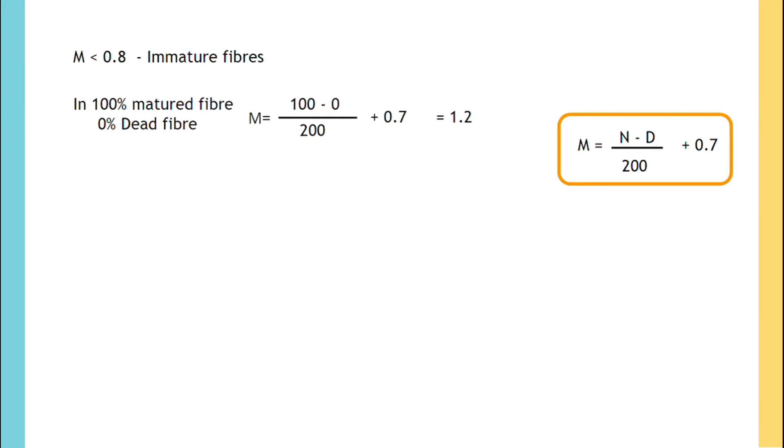And in case of immature fiber with 100% dead fibers, M = (0-100)/200 + 0.7 = 0.2. So the range of maturity ratio is 0.2 to 1.2.